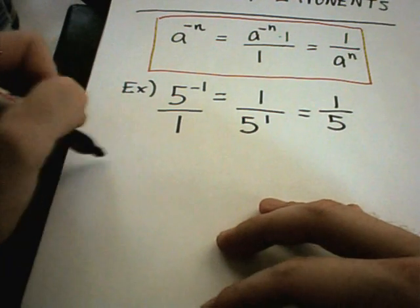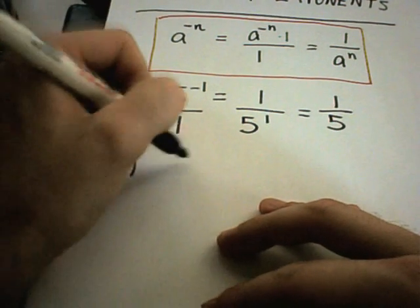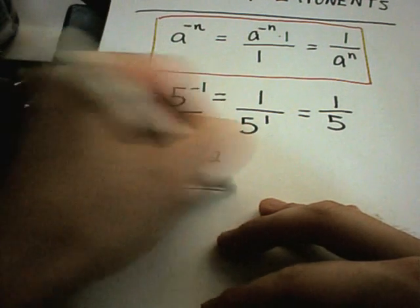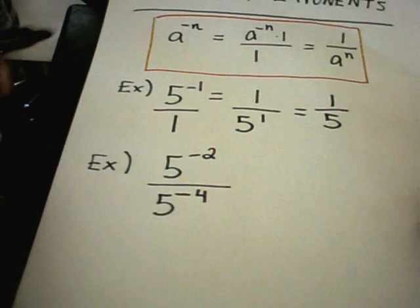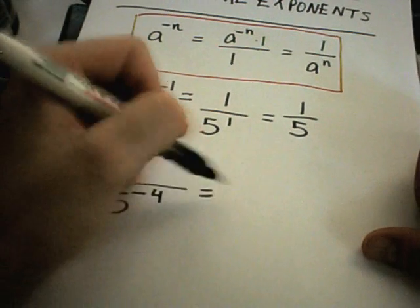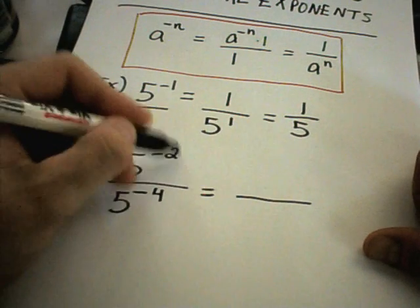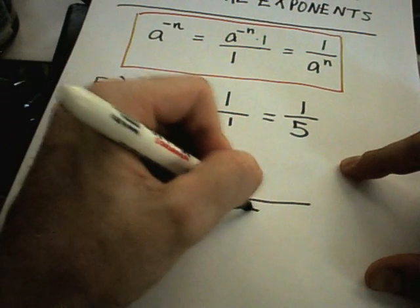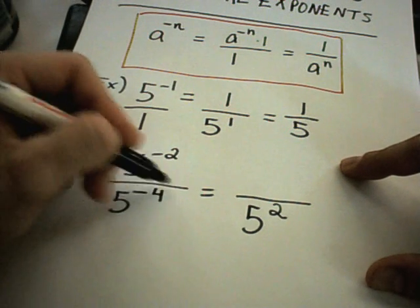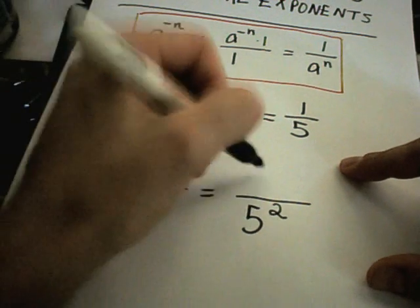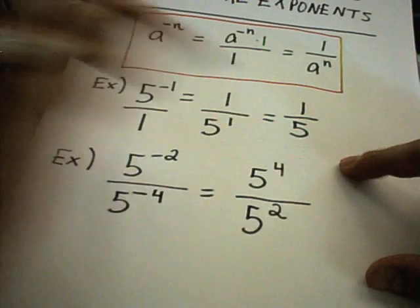Likewise, let's do another example. Suppose I have 5 to the negative second over 5 to the negative fourth, and I want to simplify this number down. Well, I see a negative 2 on top. I can put that in the bottom and make the exponent positive 2. Notice the 4 in the bottom is also negative. I'll move that to the top and make it positive 4.